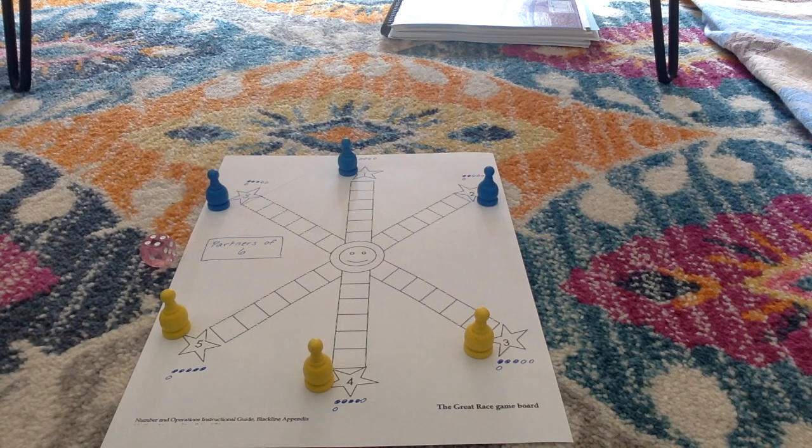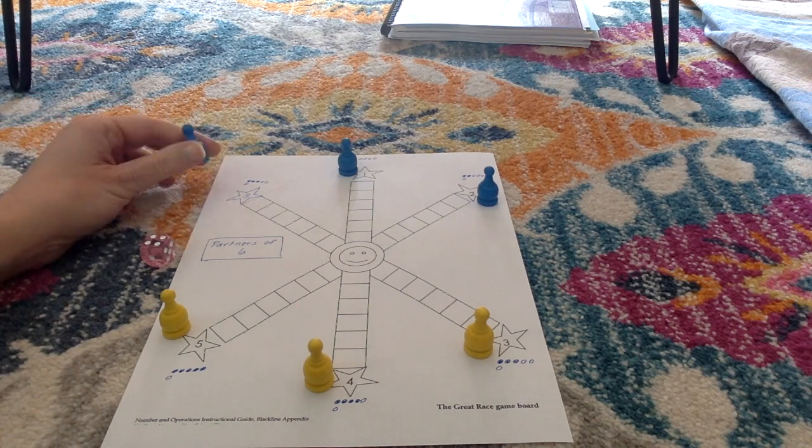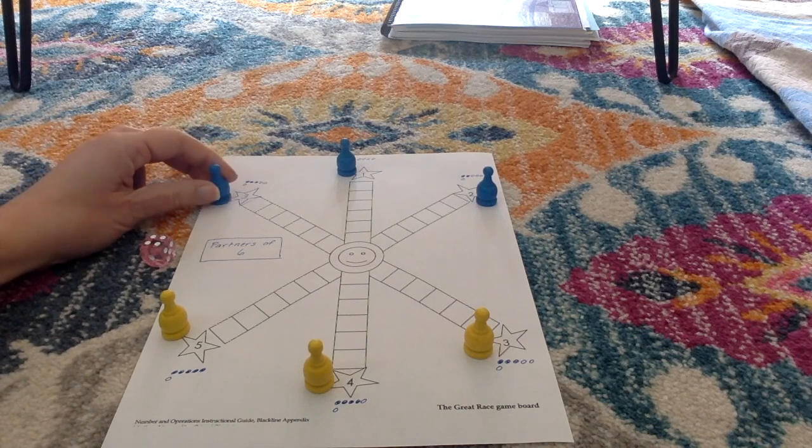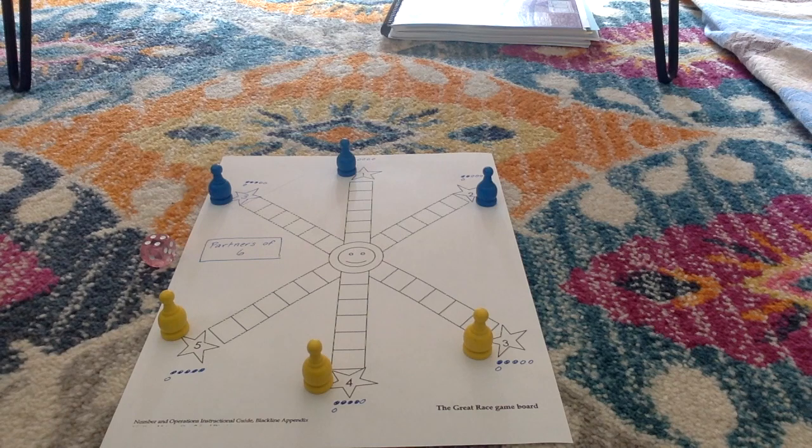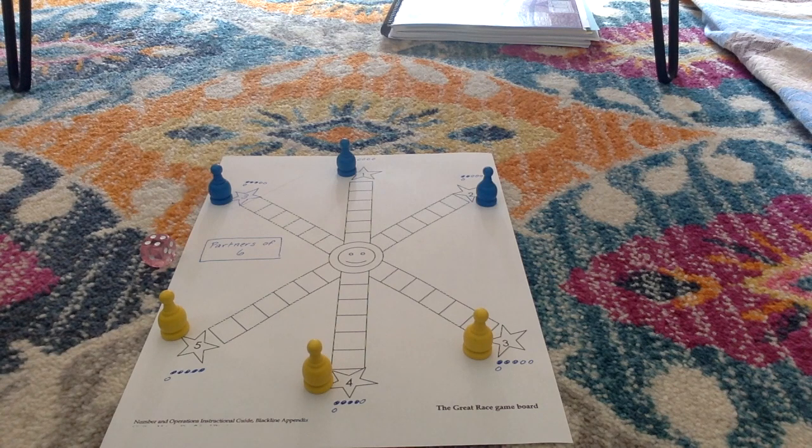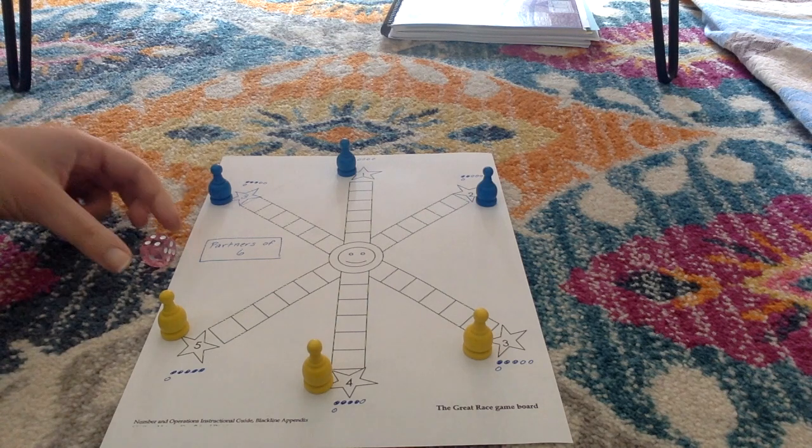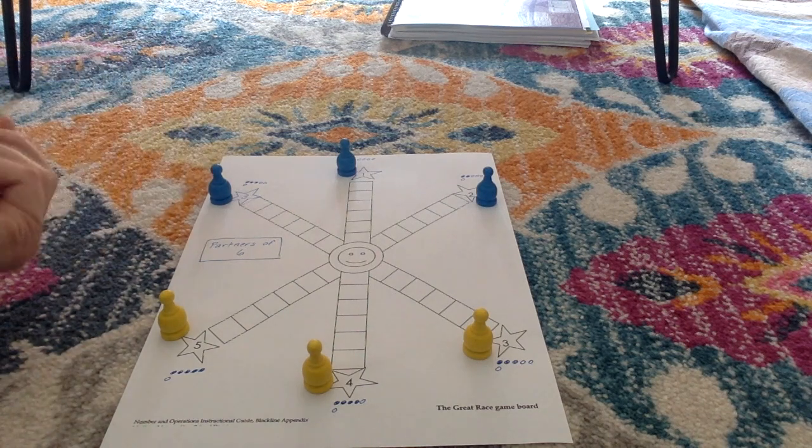So the player who has a blue pawn needs to be at a three and the player who has a yellow pawn needs to be at a three to make it fair. Just like before, the first player rolls the dice.